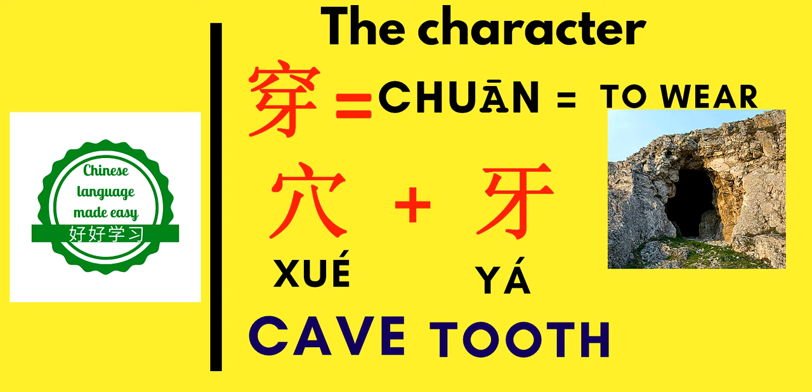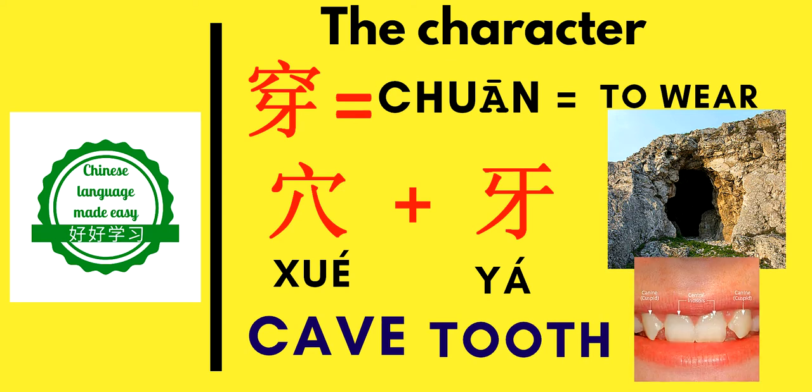The second radical is 牙 (yá), which means 'tooth' — specifically a canine tooth, a sharp tooth. The radical 穴 (xué) is combined with the radical 牙 (yá), which represents a sharp object piercing something to make a hole.